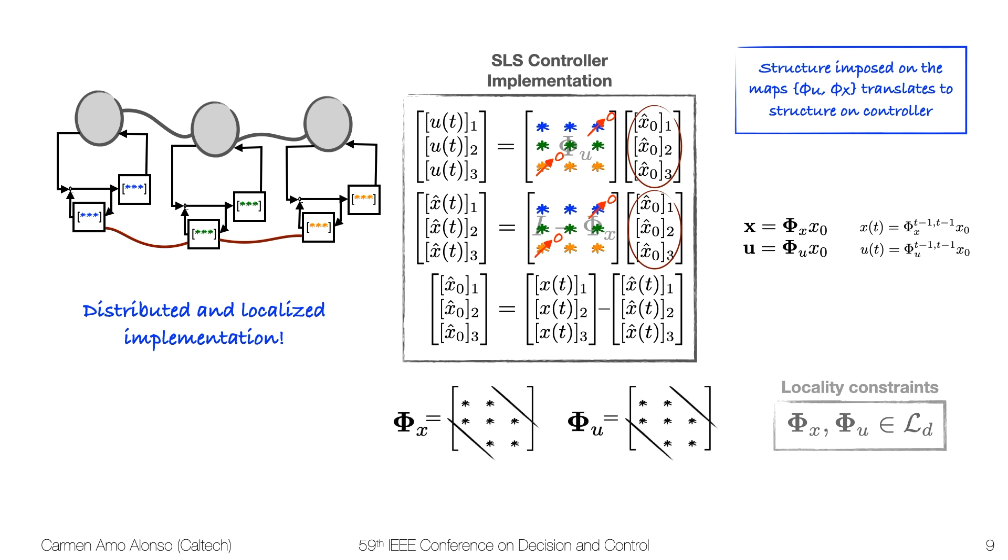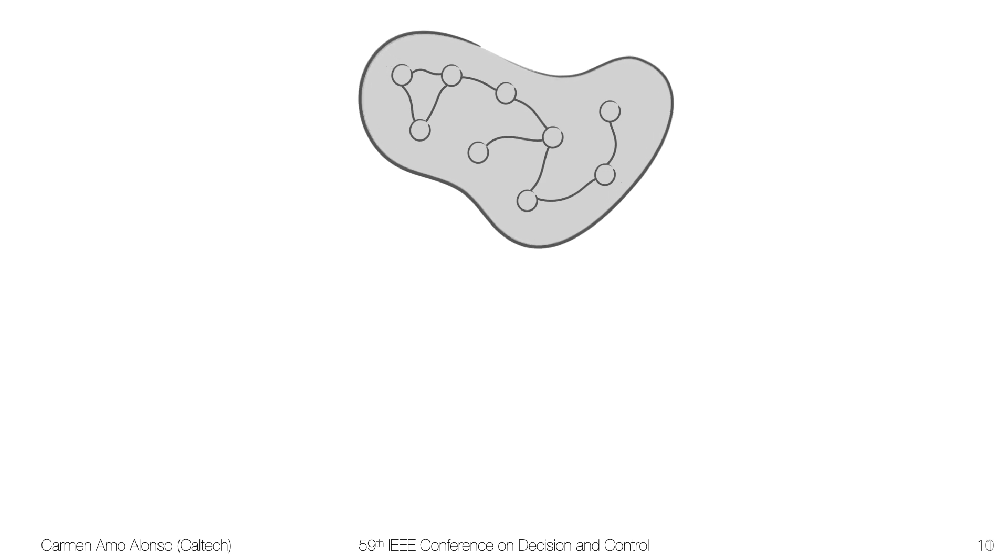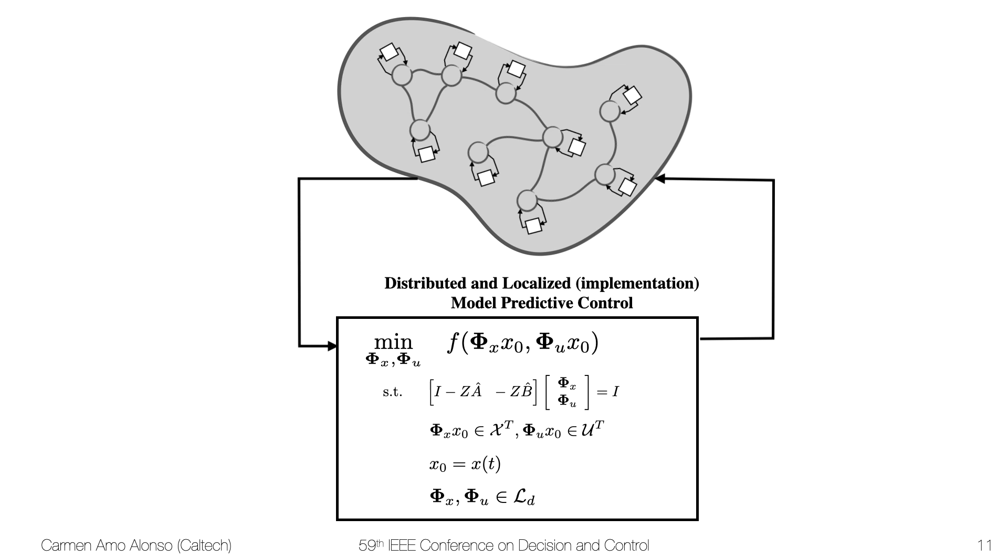Remember that we can set some of the components of phi_x and phi_u to be 0 because those are our optimization variables. So imposing locality constraints in SLS is as easy as requiring phi_x and phi_u to lie within an affine subspace. We can just go back to our problem statement and impose the locality constraints this way. By doing that, we get a distributed and localized implementation of the controllers directly just by using SLS.